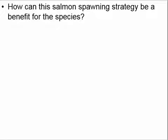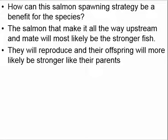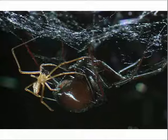After watching that clip, think about how this salmon spawning strategy can be a benefit for the species. The salmon that make it all the way upstream are the stronger fish — the weaker fish simply didn't make it. So those strong fish are going to reproduce, and their offspring will also be more likely to be stronger, just like their parents. Overall, that's a benefit to the species as a whole because more of the offspring are going to be strong.